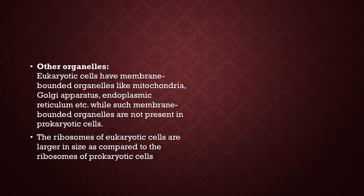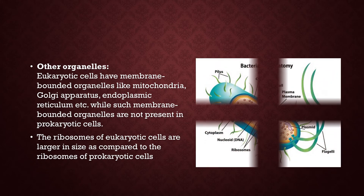Ribosomes are one organelle present in both prokaryotes and eukaryotes, but the ribosomes of eukaryotic cells are larger than those of prokaryotic cells. This is an important MCQ point: eukaryotic cells have larger ribosomes than prokaryotic cells. On the right side of the slide you can see the diagram of prokaryotic cells that lack a nucleus but have organelles similar to eukaryotic cells.